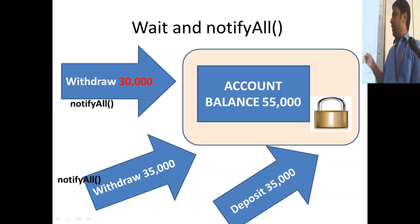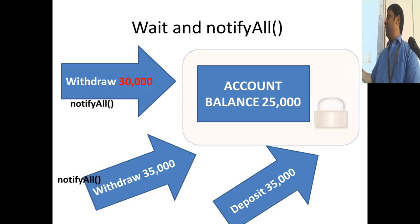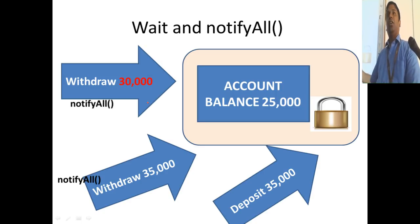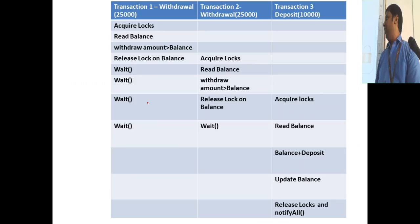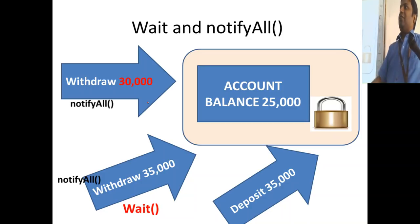One thread acquires the lock, the other waits to enter the synchronized block. The first thread checks: is withdrawal greater than balance? No — 30,000 < 55,000. So it subtracts 30,000 from 55,000, leaving 25,000. It releases the lock. The second thread acquires the lock, tries to withdraw 35,000 from 25,000, but 35,000 > 25,000 — so it goes back to wait mode and releases the lock.